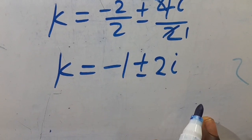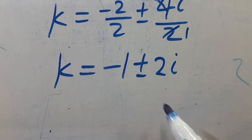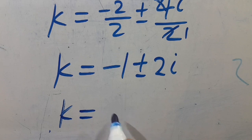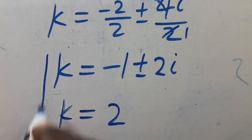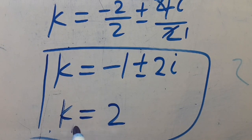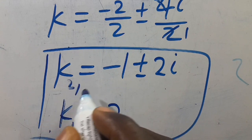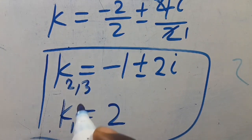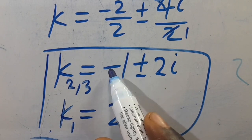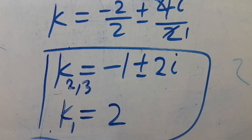So finally, we have complex solutions. We have another solution k equals 2 as the real solution. So k1 equals 2, k2 equals minus 1 plus 2i, and k3 equals minus 1 minus 2i.